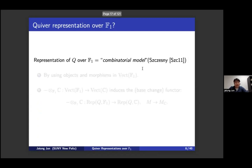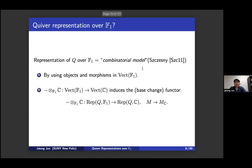Quiver representations over F1 serve as a combinatorial model for quiver representations over a finite field. This was introduced by Matt Szymanski in 2011. The idea is simple: instead of using vector spaces and linear maps, we define the category of F1 vector spaces. F1 vector spaces are finite pointed sets — quite combinatorial — but you can always move from F1 vector spaces to ordinary vector spaces via a base change functor. You can think of an F1 vector space as a choice of basis.